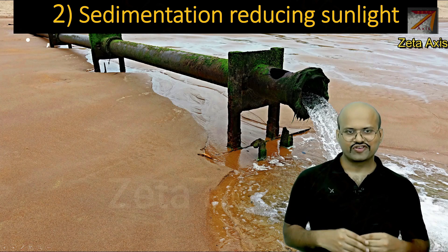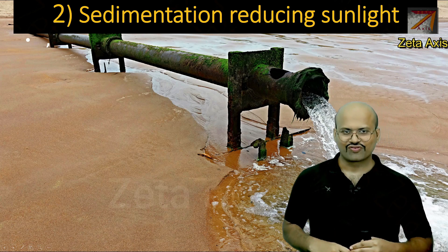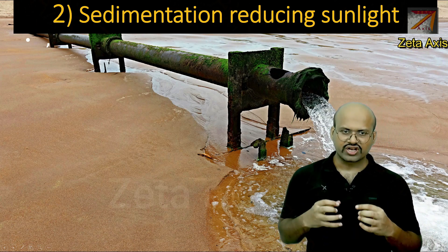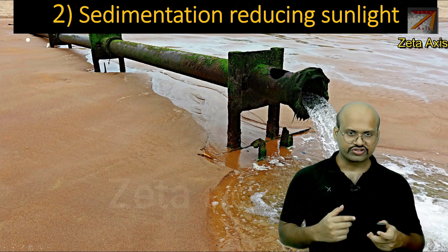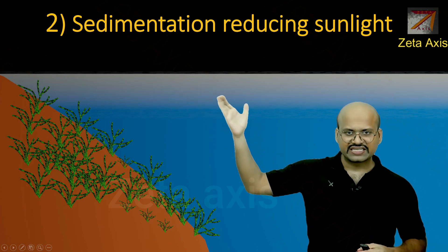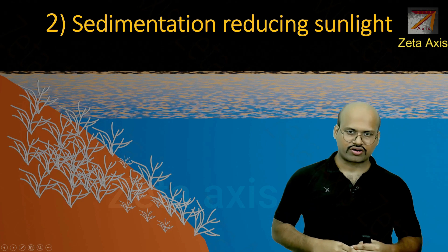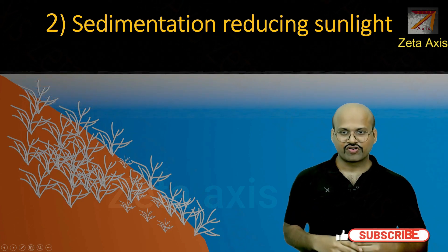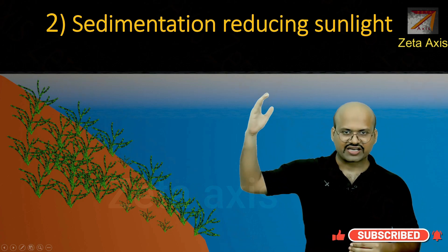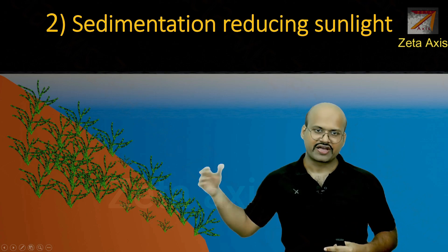The second factor which causes coral bleaching is sedimentation. Increase in sedimentation in ocean water reduces the amount of sunlight that reaches the coral reefs, and therefore they cannot perform proper photosynthesis. If sedimentation increases, the light coming to the corals will be blocked, leading to bleaching and potentially death. But if the sediments are removed in a short period of time, the corals can become active again.